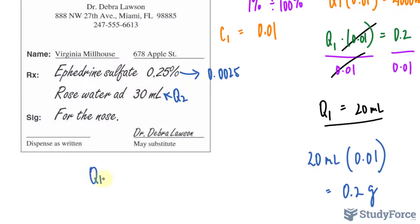Using our formula Q1C1 is equal to Q2C2, let's substitute these values. Remember our final solution needs to have a concentration of 0.0025 and its volume is 30 milliliters.